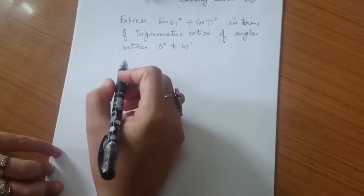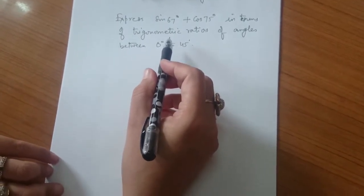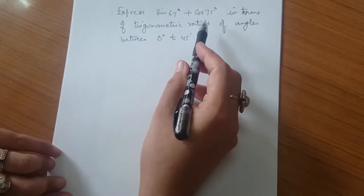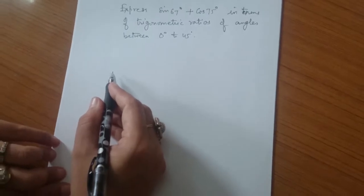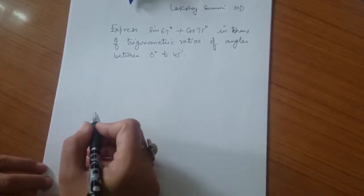Lakshay, the question for you is: express sin 67° + cos 75° in terms of trigonometric ratios of angles between 0° and 45°. How will you do this?